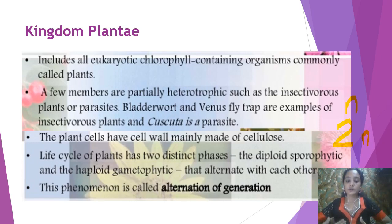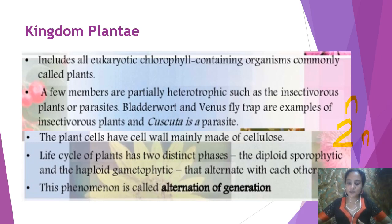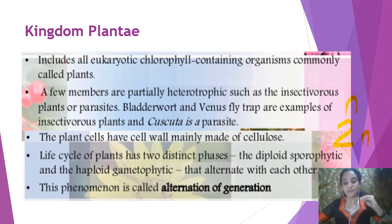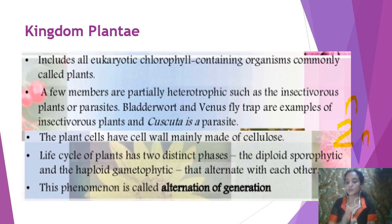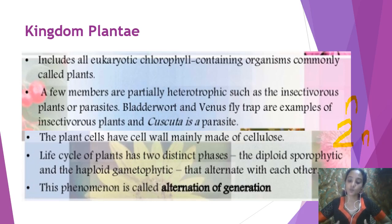In some plants, the diploid phase is the most dominant one — they remain in the diploid phase for a very long time, so the predominant phase is called the sporophytic state. In some plants, the gametophytic stage is more dominant. In some organisms, both are equal — they have half their life cycle with the sporophytic generation and half with the gametophytic generation. This is called alternation of generation.